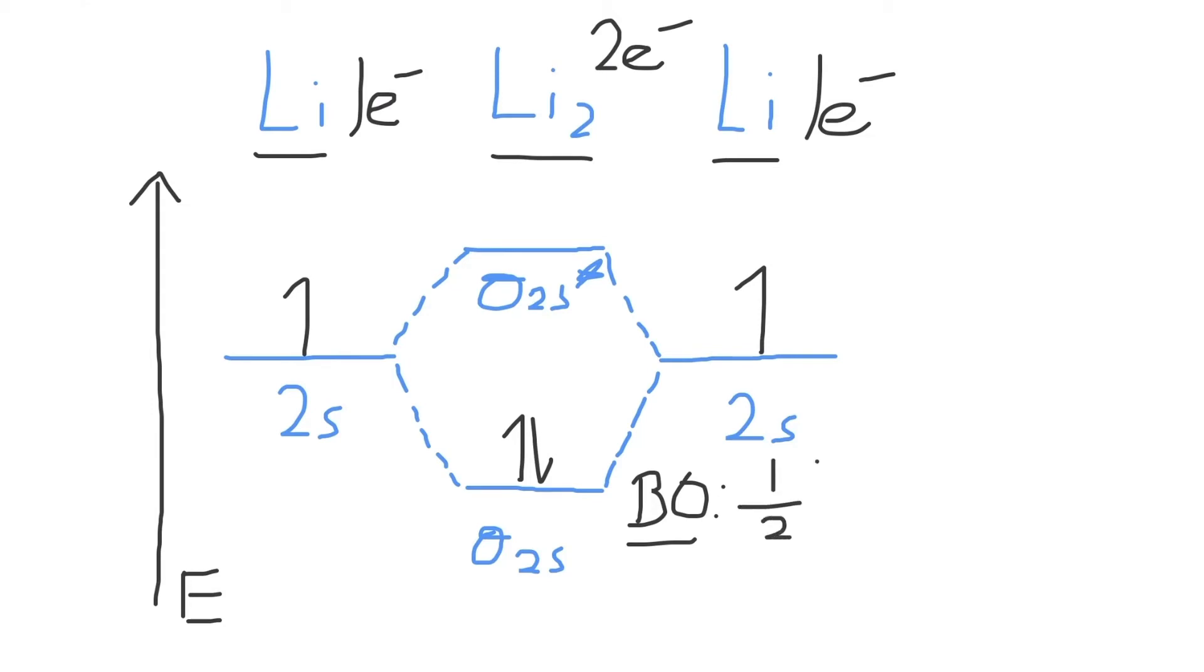The bond order is equal to one-half times the number of bonding electrons present in the sigma 2s bonding molecular orbital, minus the number of antibonding electrons which reside in the sigma 2s* antibonding molecular orbital.